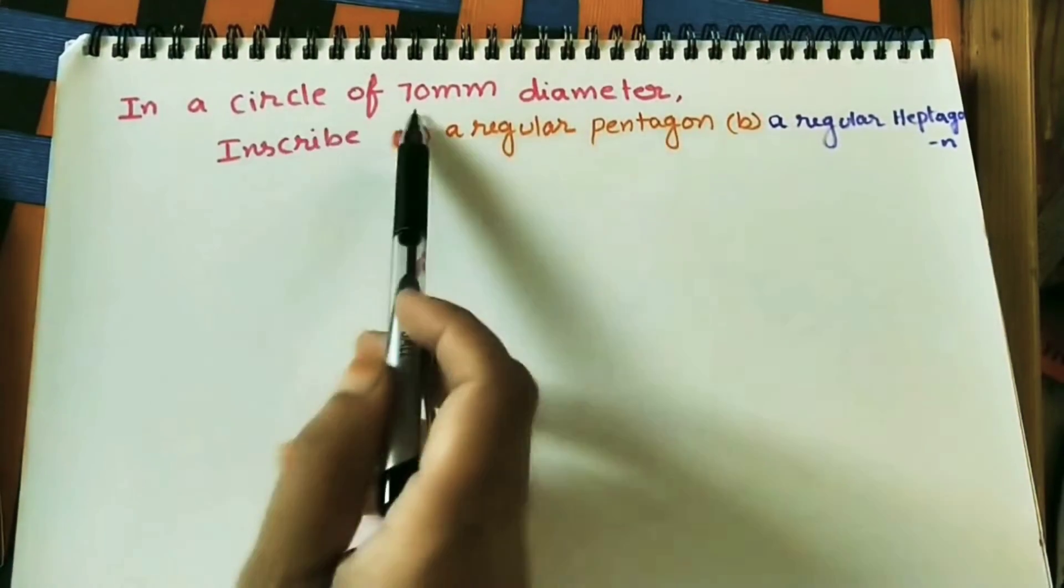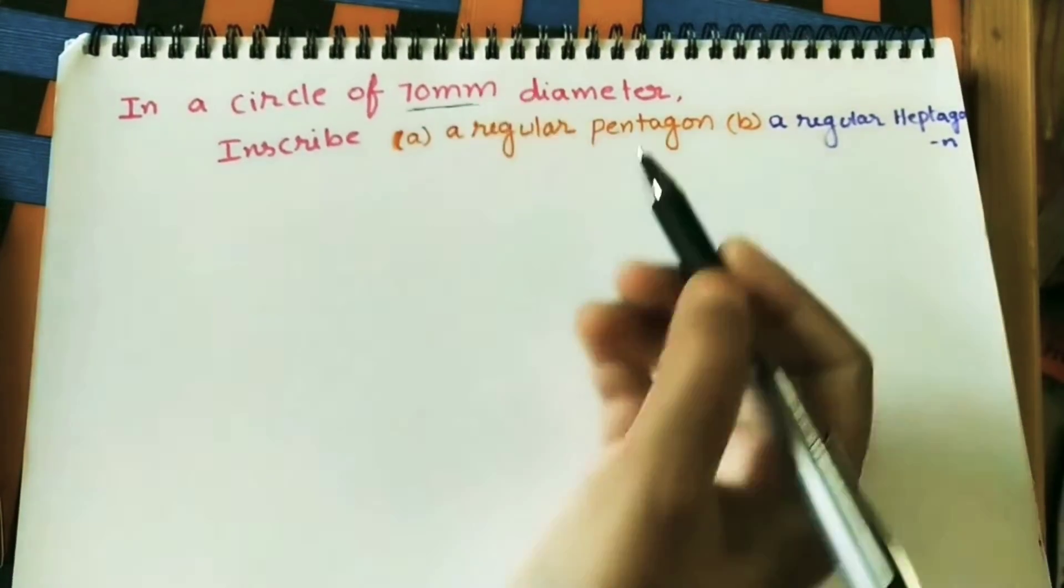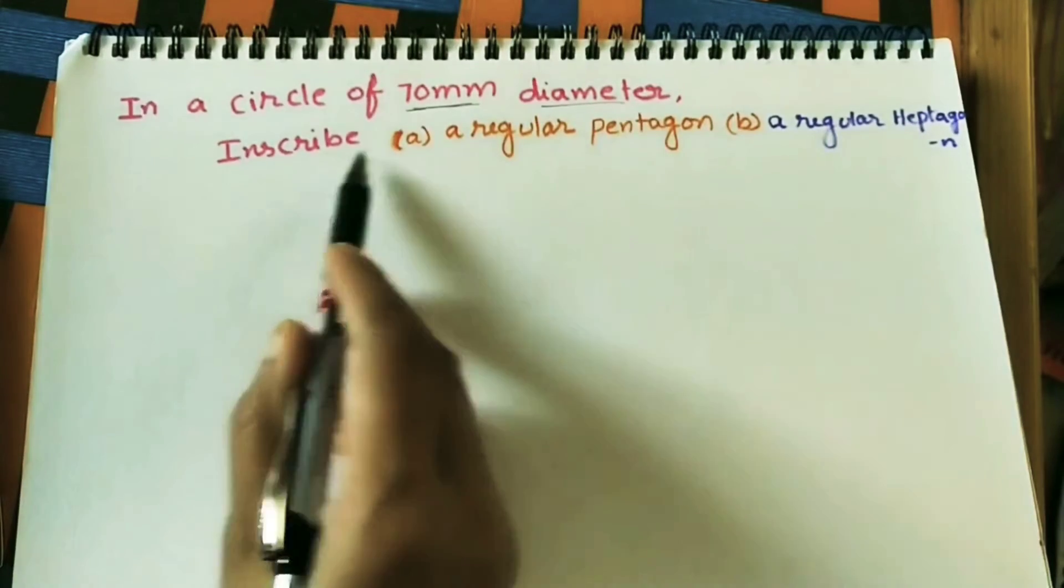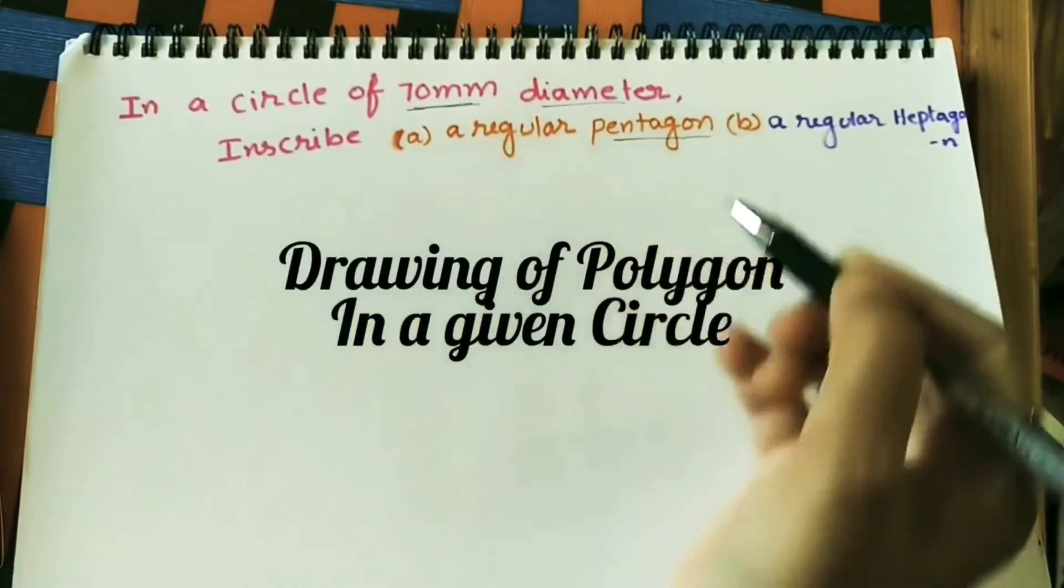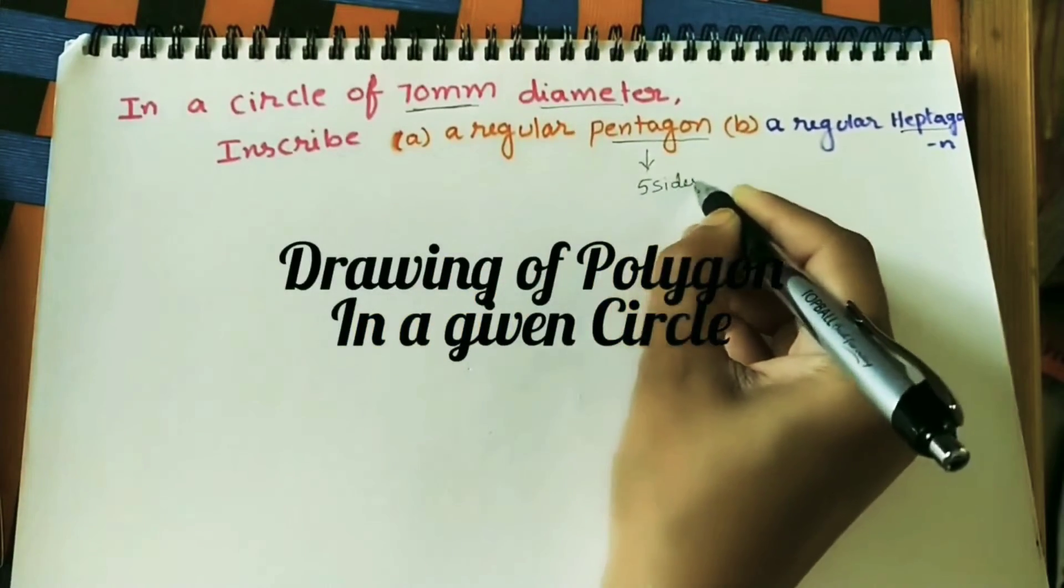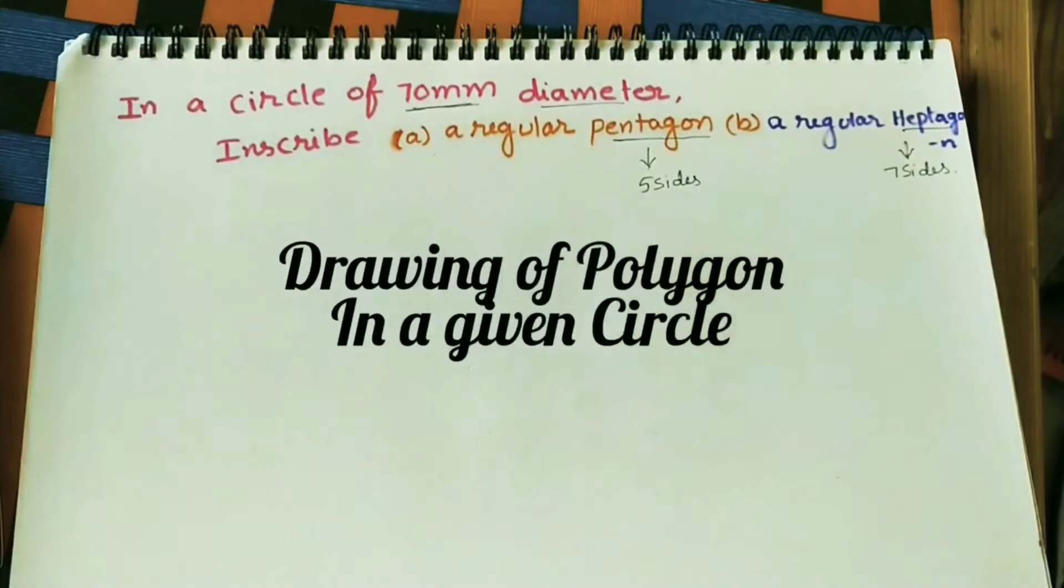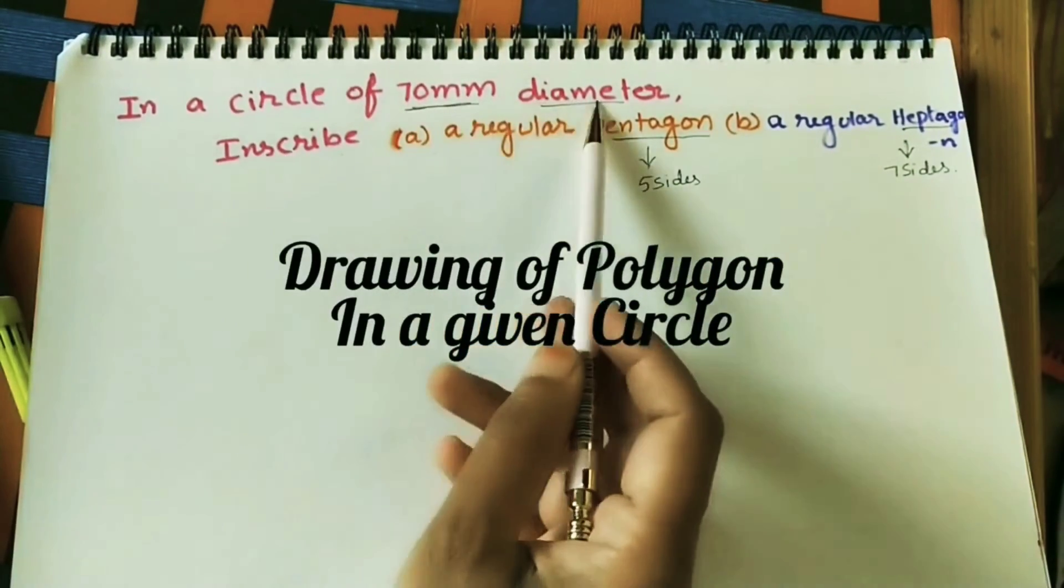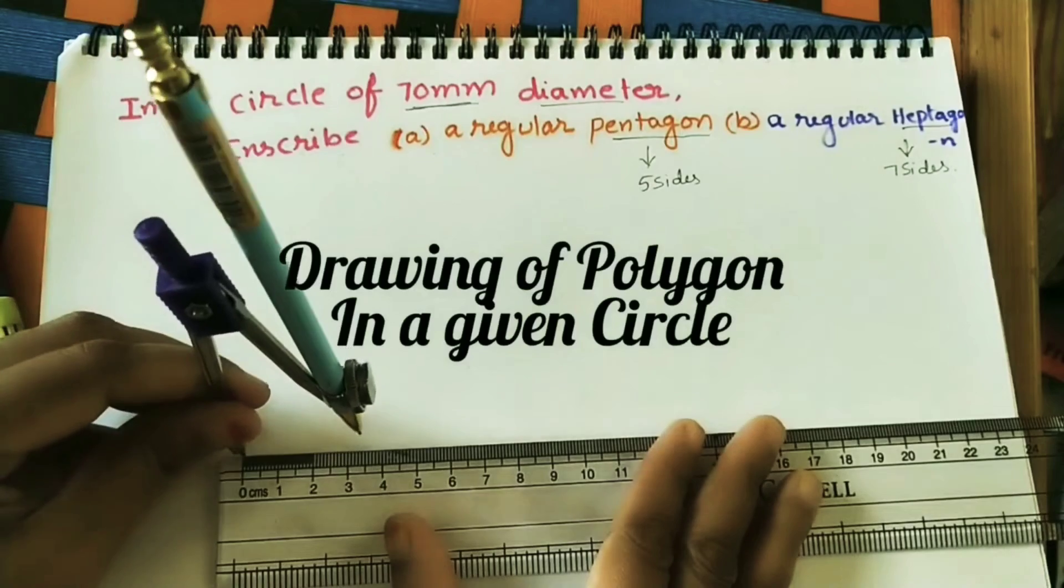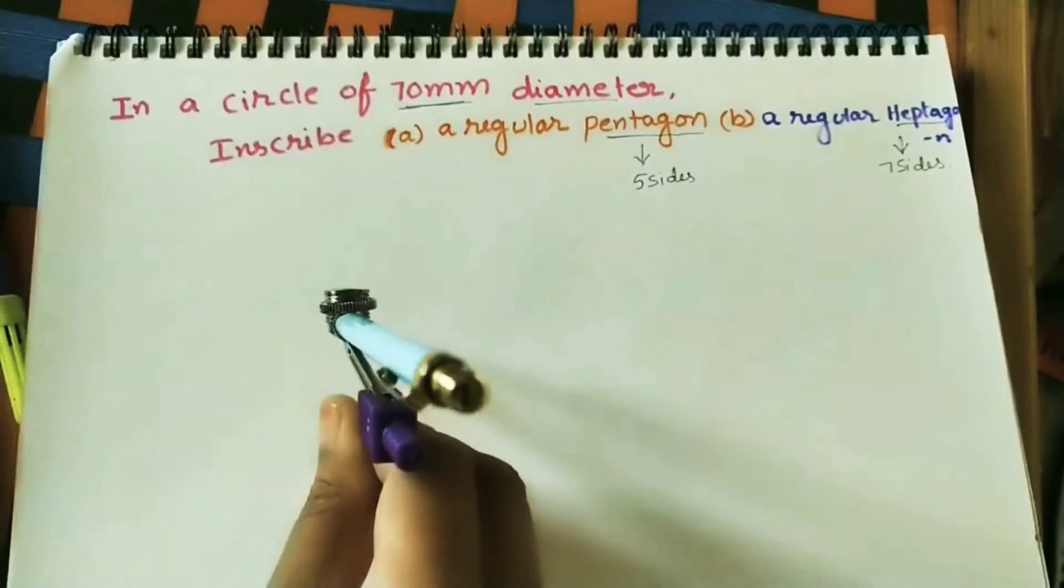We do circle of 70mm diameter. In it we will do the pentagon. As we know pentagon has 5 sides. We can do any polygon in a given circle. Here circle diameter is 70mm, radius is 3.5cm, 35mm.